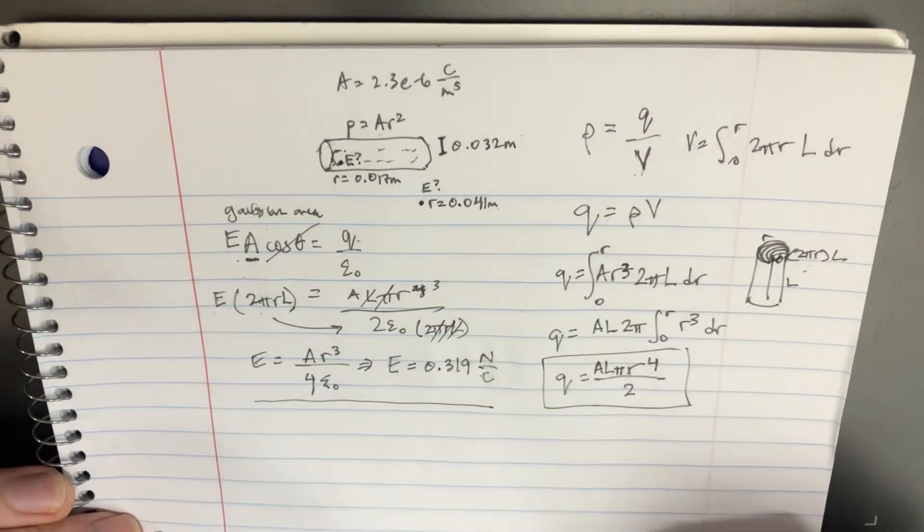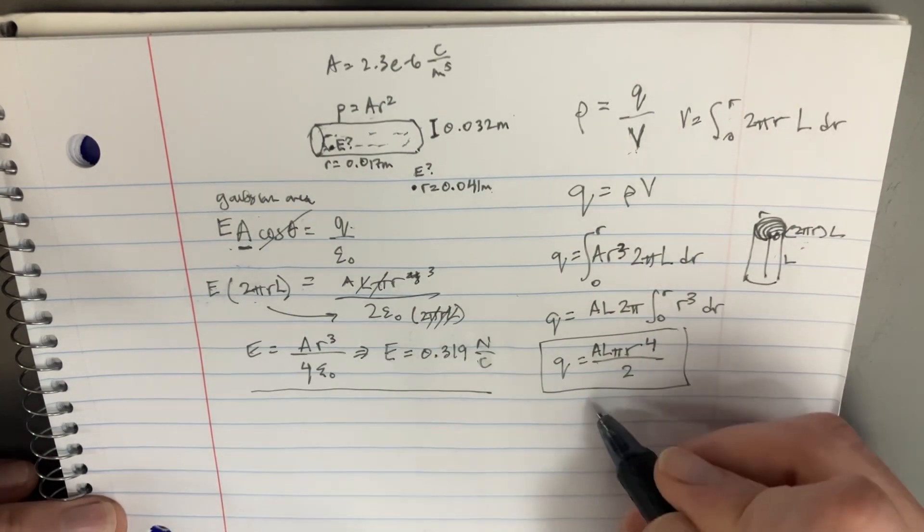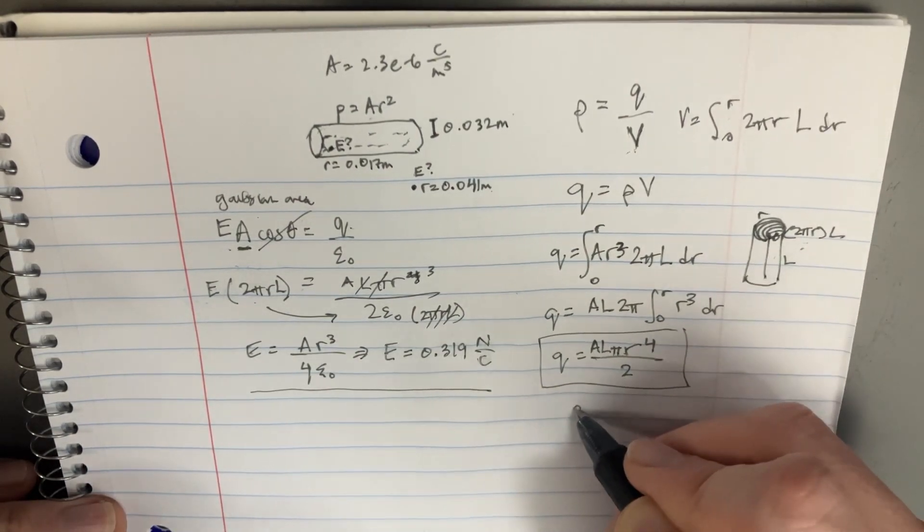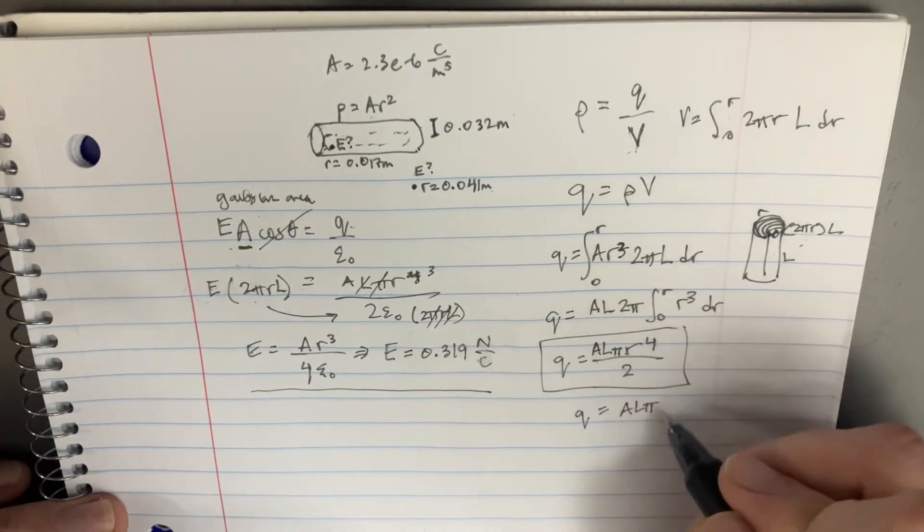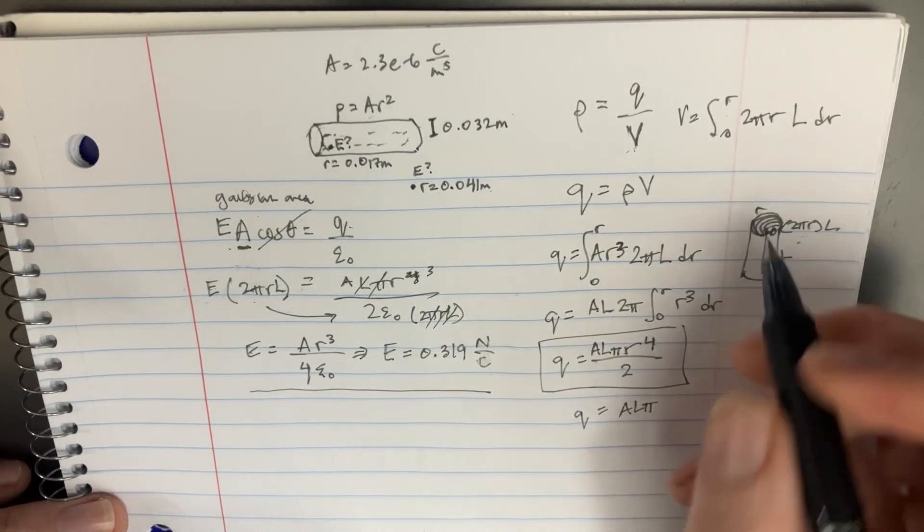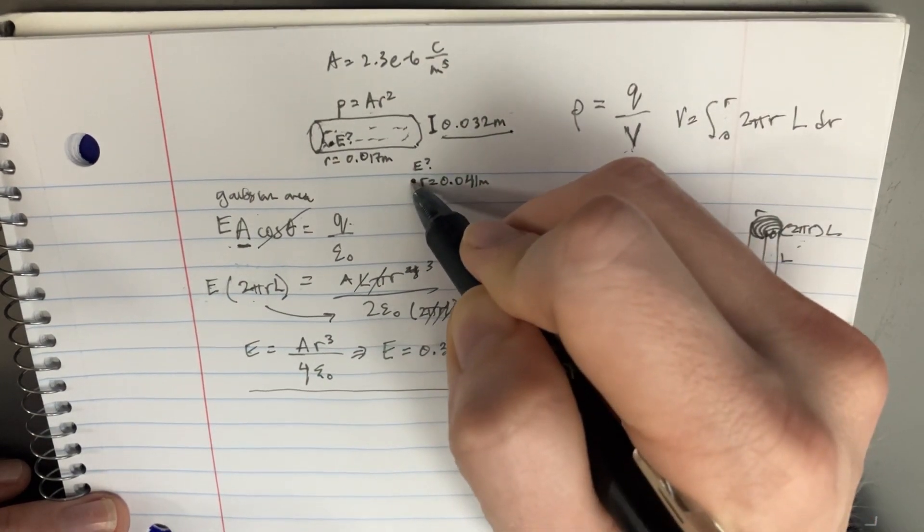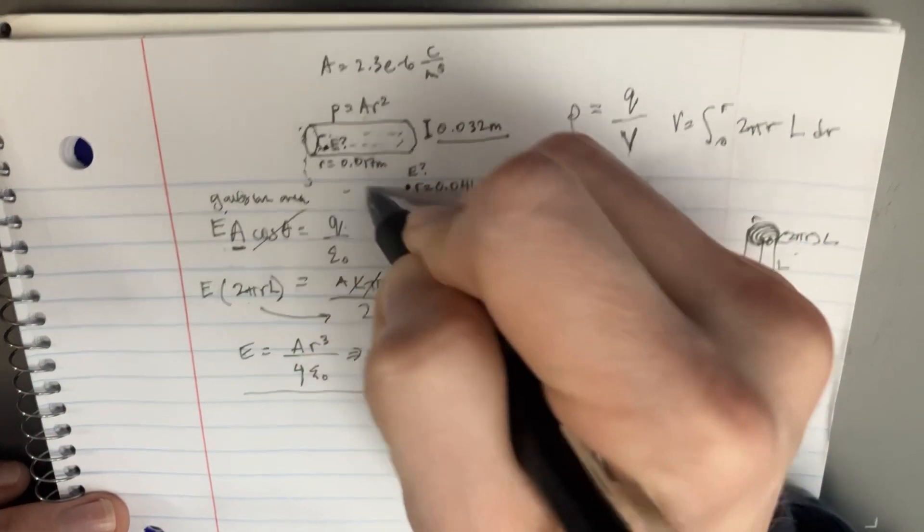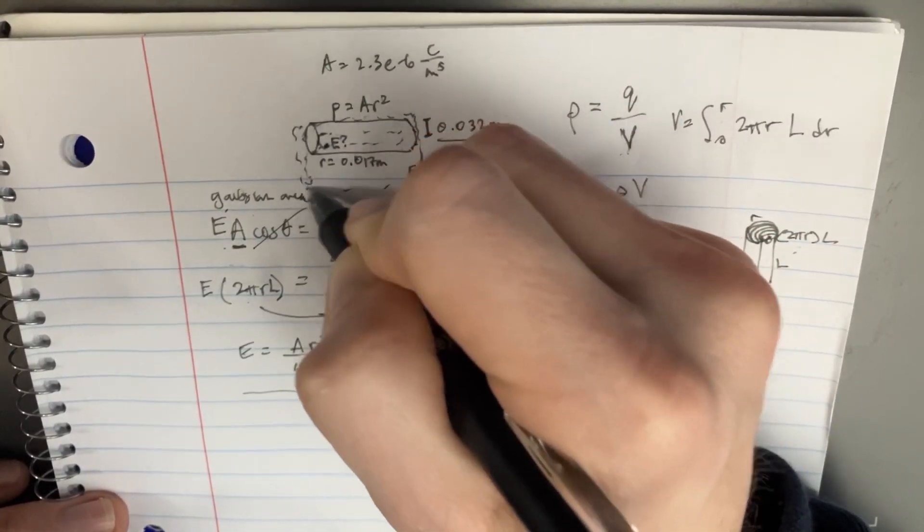And in the second half, we're going to use a very similar type of integral. But this time, let's realize that when we integrate this stuff, Q equals A, L, π, r to the fourth. Or, that radius is going to be this. Because now that we're outside here, the Gaussian area is going to change to this. We're going to get a big cylinder on the outside.